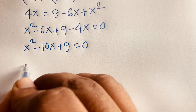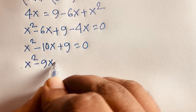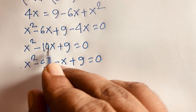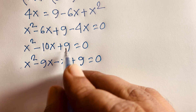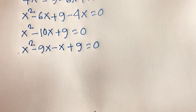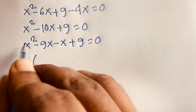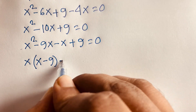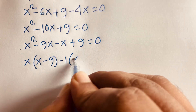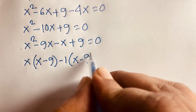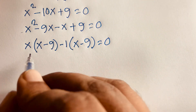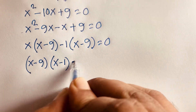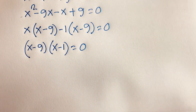To factor x² - 10x + 9 = 0 using the middle term split, I write it as x² - 9x - x + 9 = 0, since 9 × 1 = 9 and 9 + 1 = 10. Taking x common from the first pair: x(x - 9), and -1 common from the second pair: -1(x - 9). So (x - 9)(x - 1) = 0.